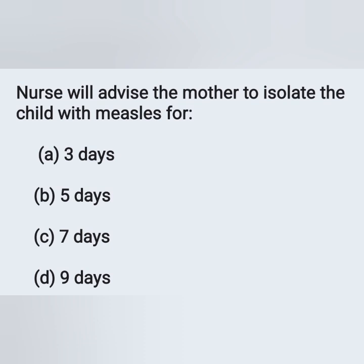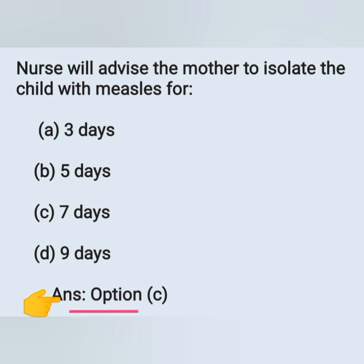A nurse will advise the mother to isolate a child with measles for how long? Option A: 3 days. Option B: 5 days. Option C: 7 days. Option D: 9 days. The period of communicability is approximately 4 days before and 4 days after the onset of appearance of rashes. So the correct answer is 7 days — option C.